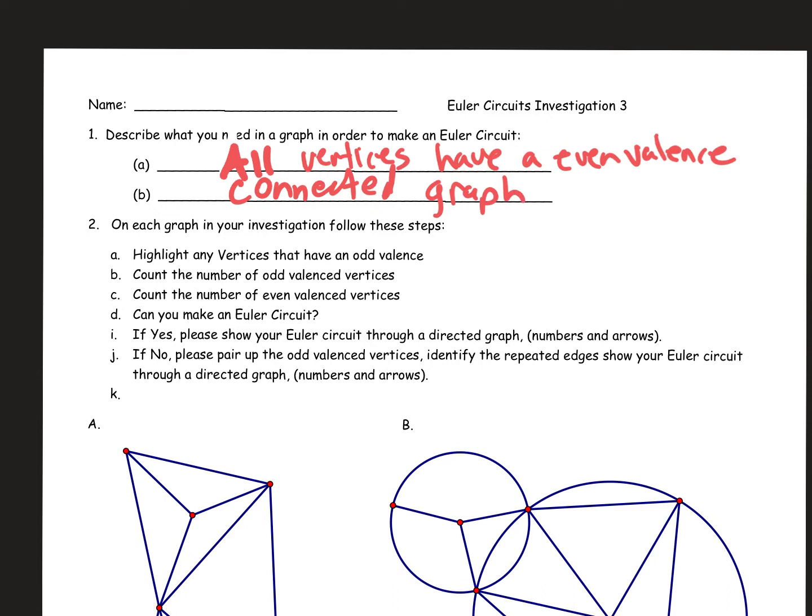If you don't have those two things, guys, there's no Euler circuit in that graph. That's why we started talking about Eulerizing graphs this week. If you've got a graph that has one vertex with an odd valence, we've got another way to do it. We've got a tool to fix that. And that's what we're doing today.